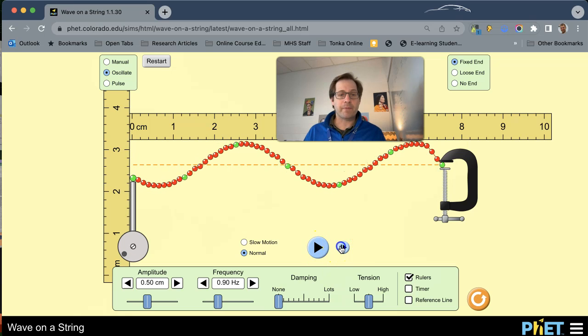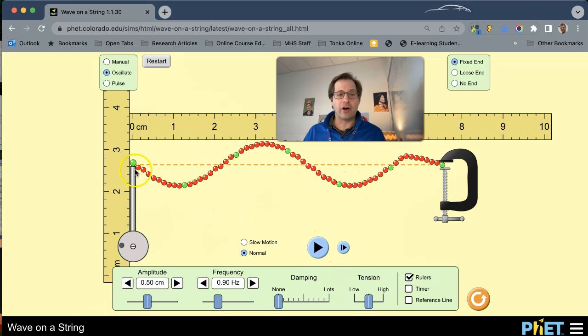Or I could fast forward a little bit and I can go from start of the wave all the way through to the start of the wave again. Again, about 4.3 centimeters for that wavelength.